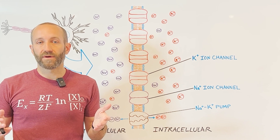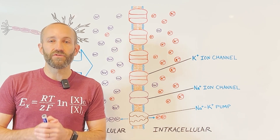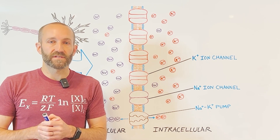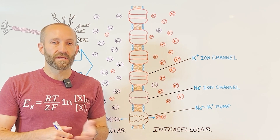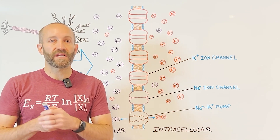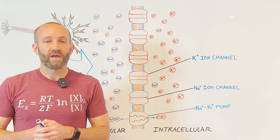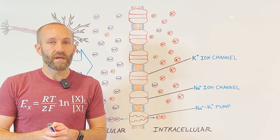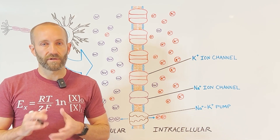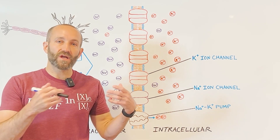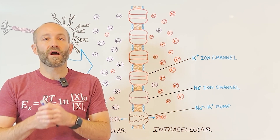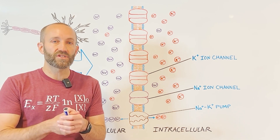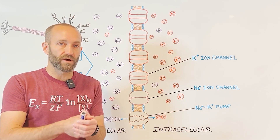In addition to the sodium-potassium pump, we have to consider the influence of diffusion and electrostatic forces. Diffusion is the movement of a substance — in this example the movement of ions — from areas of high concentration to areas of low concentration. Electrostatic forces cause like charged particles to repel one another, and opposite charges to attract one another. So positively charged ions will be less likely to move closer to other positively charged ions, but more likely to move towards a negatively charged ion or a negatively charged environment.